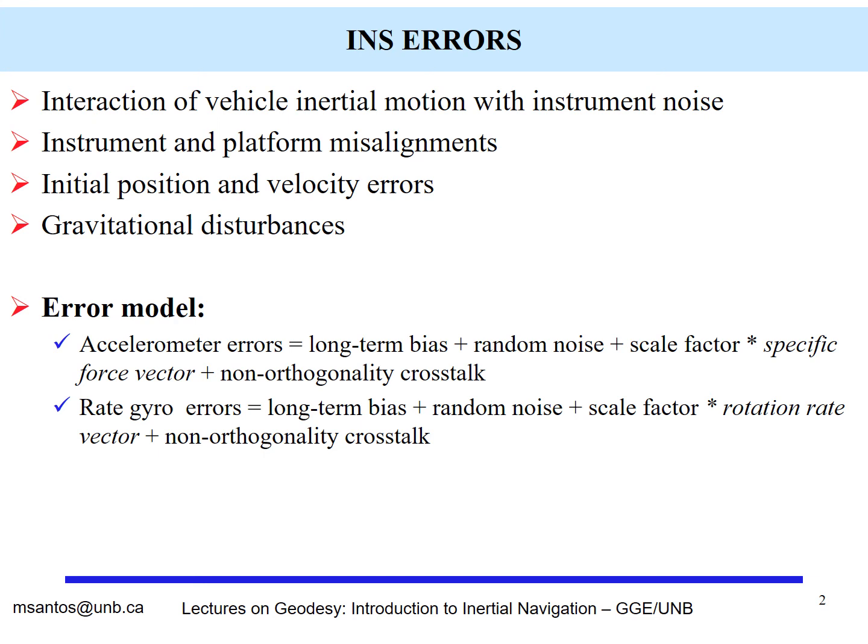So if you look in terms of the error model, the accelerometer errors, we have long-term bias, random noise, the scale factor times the specific force vector, and non-orthogonality crosstalk. If you look at the rate gyro errors, for example, we have long-term bias, random noise, scale factor multiplied by rotation rate vector, and non-orthogonality crosstalk. So we can see that they share common error sources, and of course it will apply differently depending on the quantity they are measuring.